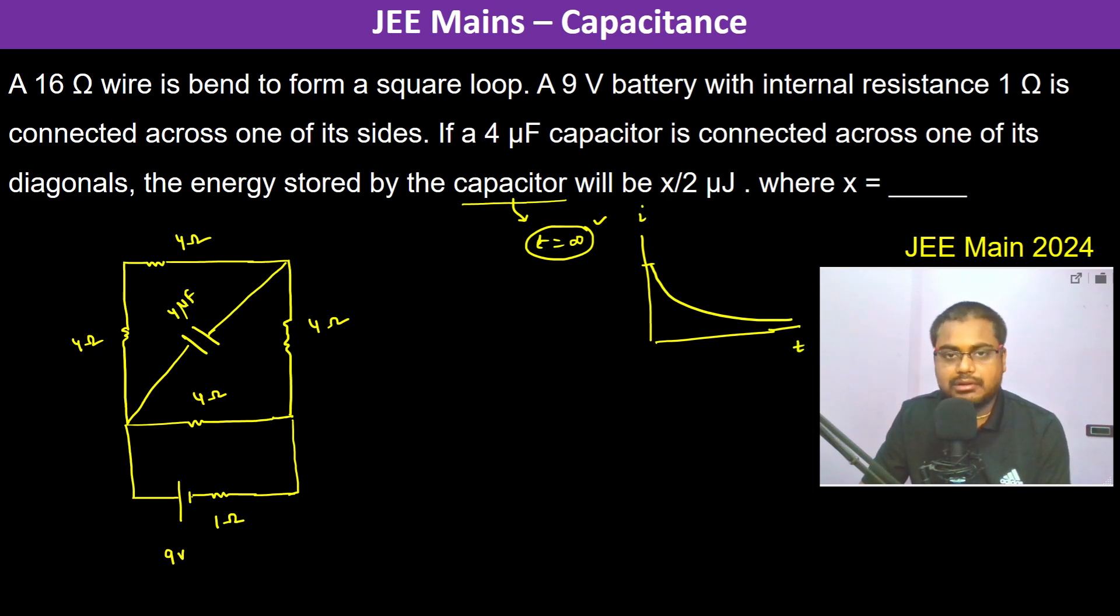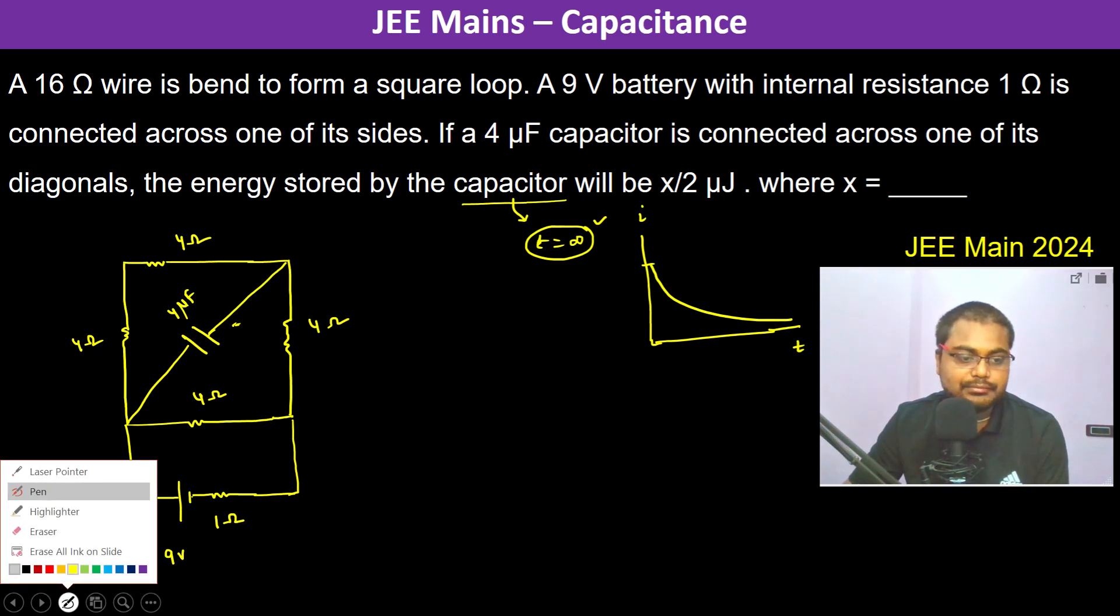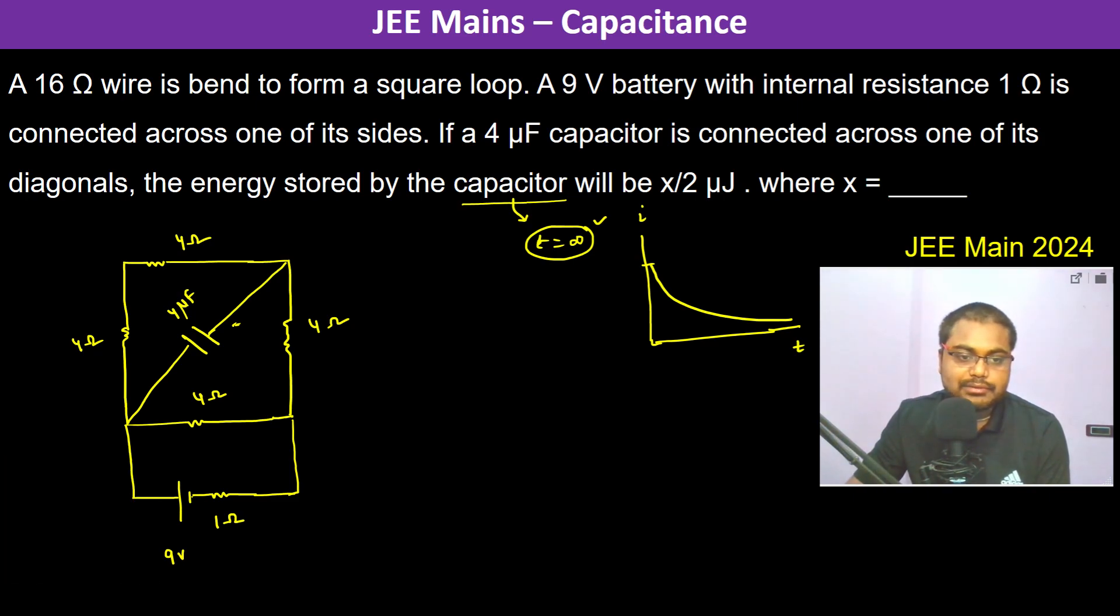This is the current graph against time. So the current in the capacitor becomes zero, therefore it acts as if it is an open circuit.